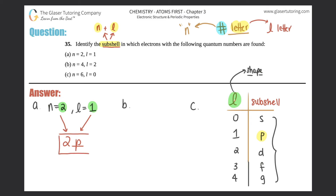For part (b): n = 4, l = 2. It's the number then the letter, so n = 4 gives us four, and l = 2 — the two value is d — so this would be a 4d subshell. Box that answer off.